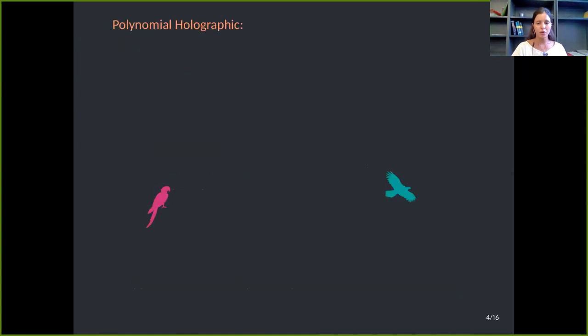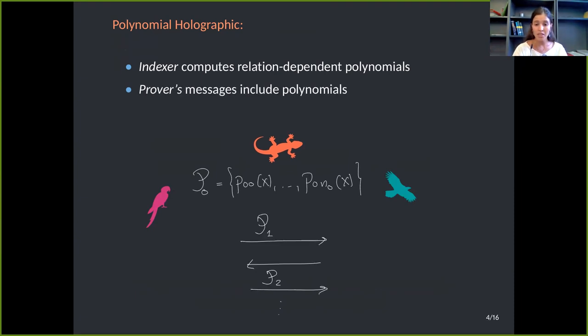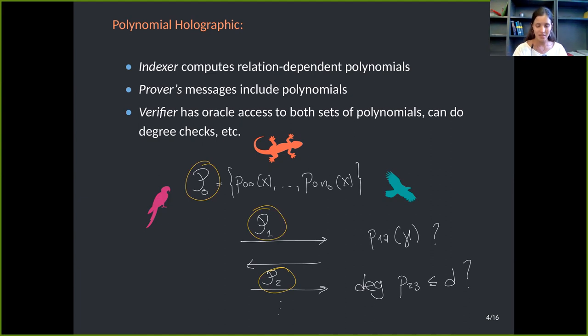So what is a holographic proof? And here I'm going to use the notion introduced in Lunar, but with different flavors they are called in different ways in previous work. So we have, as always, the prover and a verifier, but also we have a third entity, which is the indexer. The indexer is going to output polynomials that describe the relation. Then prover and verifier will interact. Prover messages will include polynomials as well. And the verifier, rather than having to read these polynomials, will have oracle access to them. So it can query them at arbitrary points of their choice and perform degree checks, among others. So we want to construct a polynomial holographic proof for proving general relations.